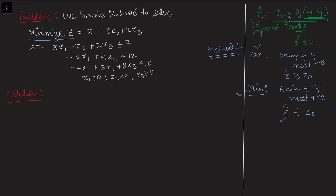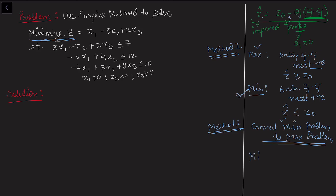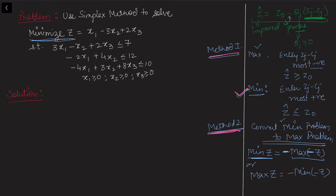This is Method 1: we change the entering rule since our problem is minimization. In Method 2, if we always want to remember one rule — that the entering variable should be most negative — we convert the minimization problem into a maximization problem. To do this conversion, we rewrite: minimization of z is the same as minus of maximization of minus z. Taking the negative of the objective function twice gives us the minimum of z.